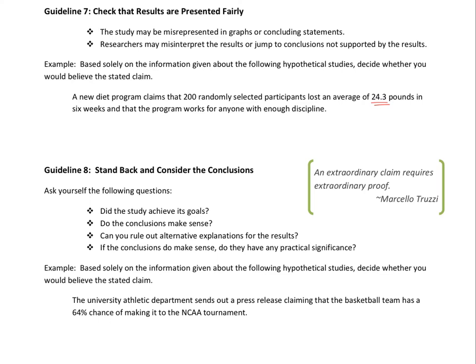Another example: a University Athletic Department issues a press release claiming its basketball team has a 64% chance of making the NCAA tournament. This raises many questions — how was that 64% determined? Was the survey only given to fans of the university? Were non-fans included? None of these questions can be answered from the statement alone, so this claim should not be believed. These guidelines give you a framework to start questioning statistical results you encounter everywhere.